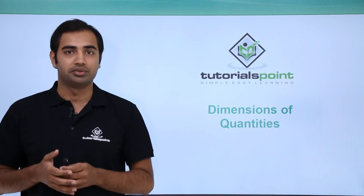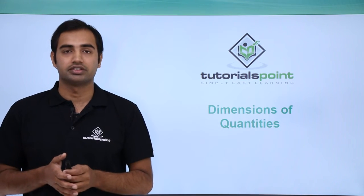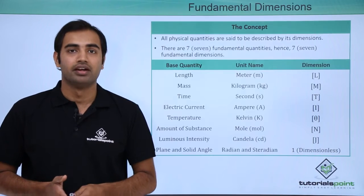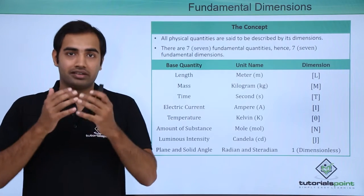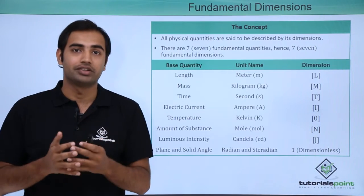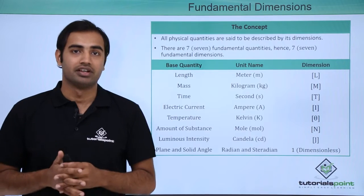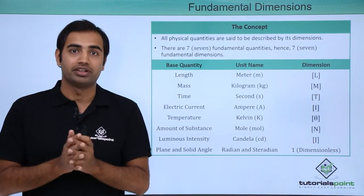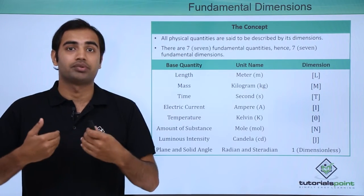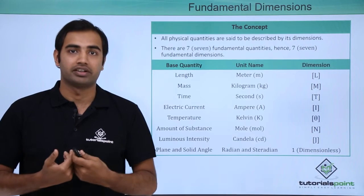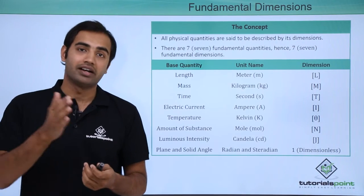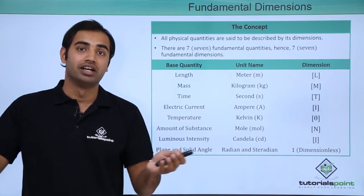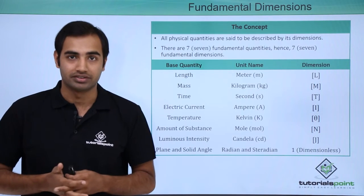Let's talk about the next topic in units and dimensions: dimensions of physical quantities. All physical quantities can be said to possess something called dimensions. In any metric system, these fundamental quantities are said to represent fundamental dimensions of that metric system, and every other derivable quantity essentially possesses the combination of these dimensions.